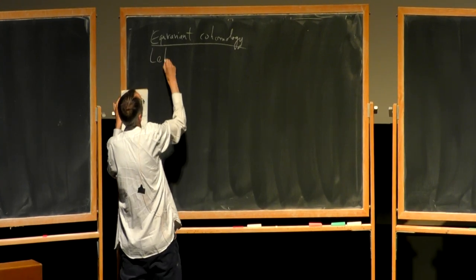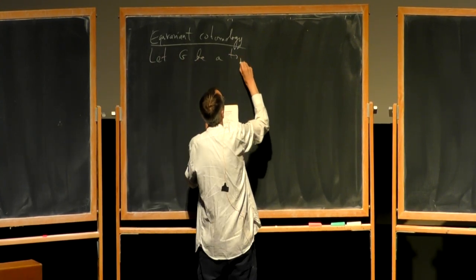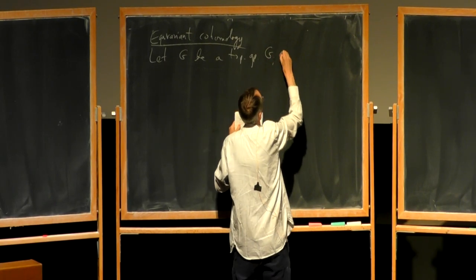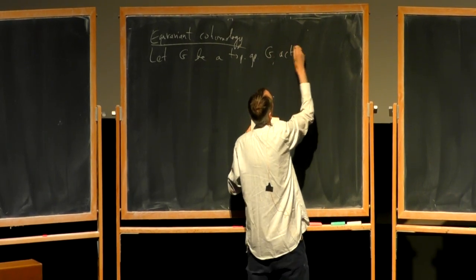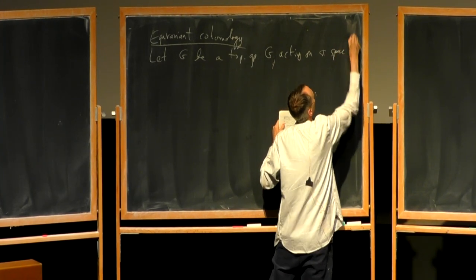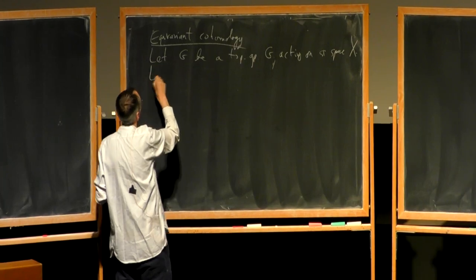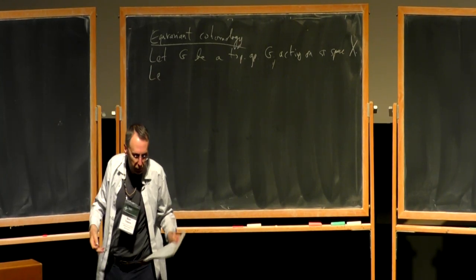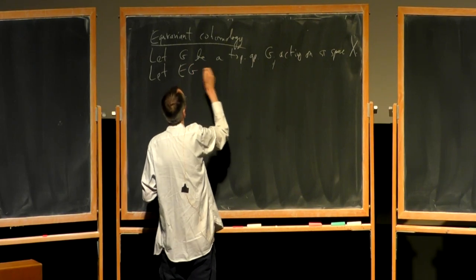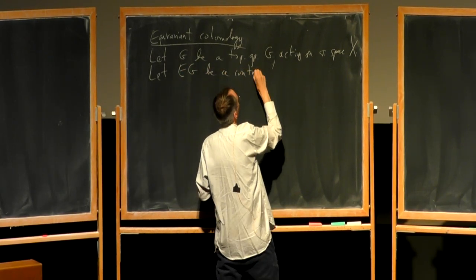In topology, the setup is: you take a topological group — for example, a discrete group acting on a topological space X — and you choose a contractible space with a free action of G, which essentially always exists. Let's call that EG, a contractible free G-space.